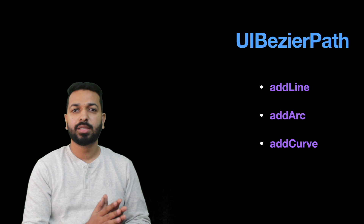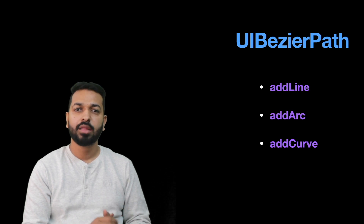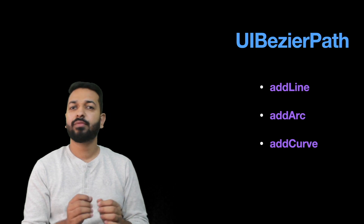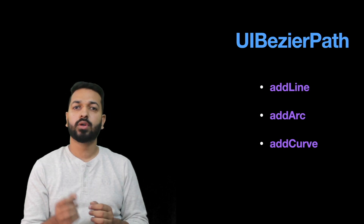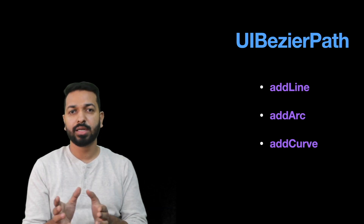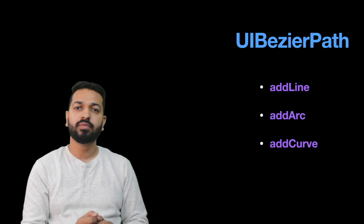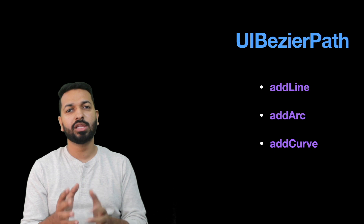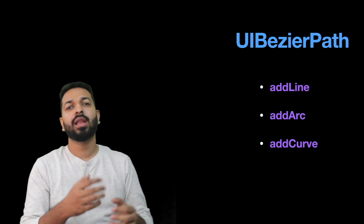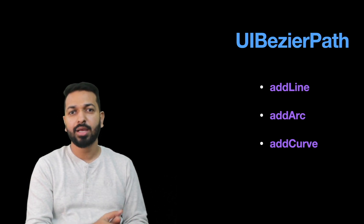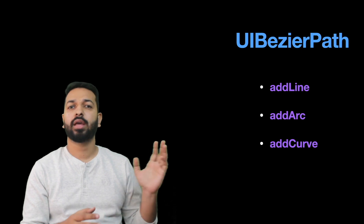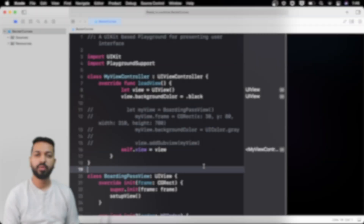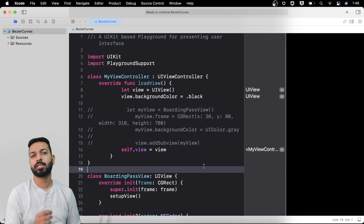You can imagine the same thing for the four corners, where we have four quarter-circle sectors with a comparatively larger radius — but eventually they are part of a circle. Before starting the implementation, here are the three Swift API methods we'll use from UIBezierPath: addLine for drawing straight lines, addArc for drawing any arc or part of a circle, and addCurve for drawing any custom curve not part of a circle.